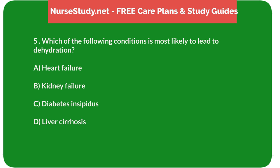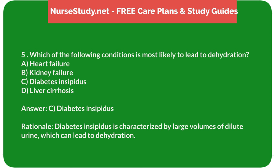Question 5: Which of the following conditions is most likely to lead to dehydration? A. Heart failure. B. Kidney failure. C. Diabetes insipidus. D. Liver cirrhosis. Answer: C. Diabetes insipidus. Rationale: Diabetes insipidus is characterized by large volumes of dilute urine, which can lead to dehydration.